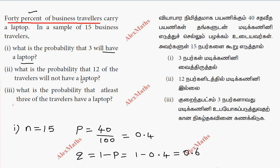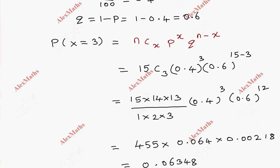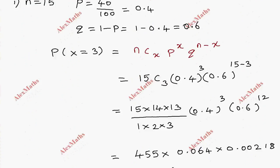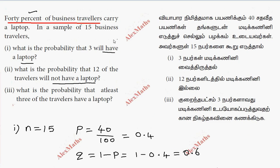Second subdivision: find the probability that 12 of the travelers will not have a laptop. Since they will not have a laptop, P and Q interchange. So n = 15, p = 0.6, q = 0.4, and P(x = 12).